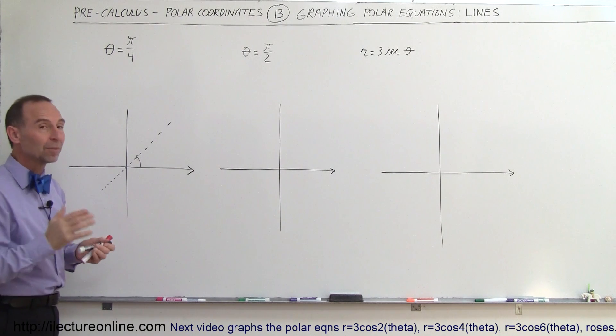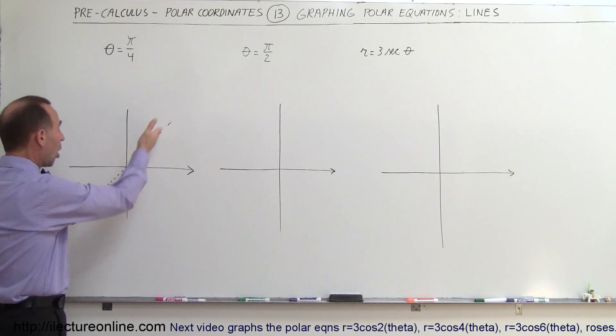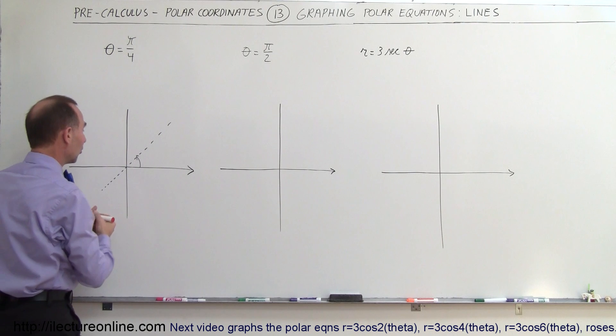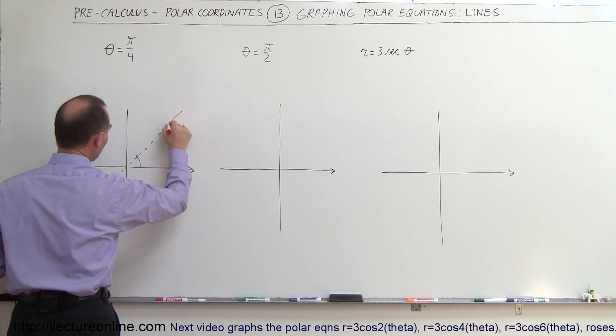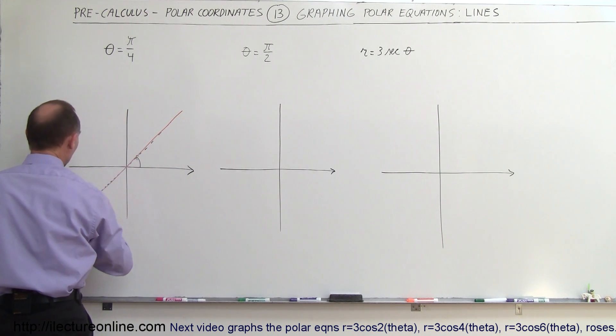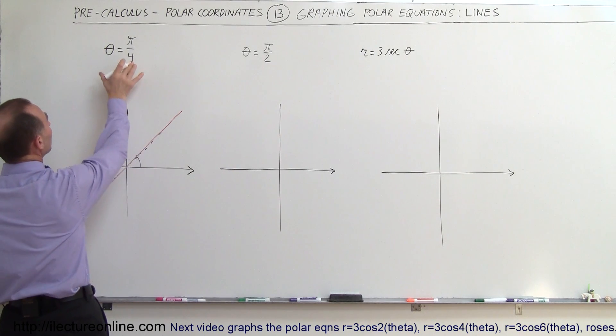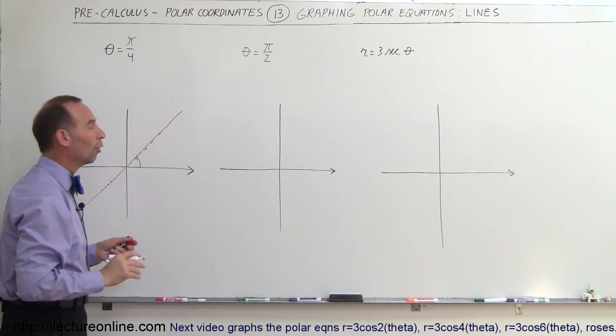Since r can be any value, this red line right here represents the graph of the equation theta equals pi over 4.